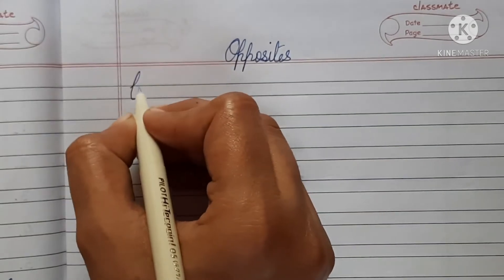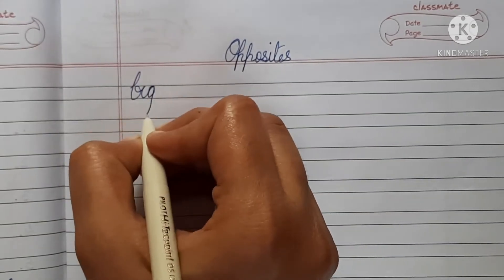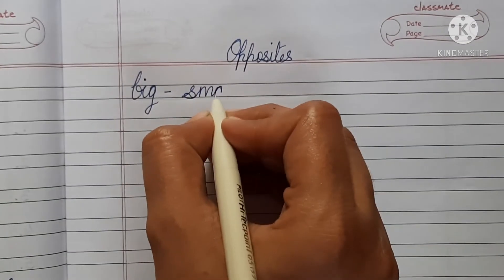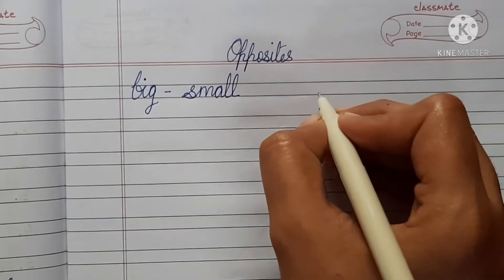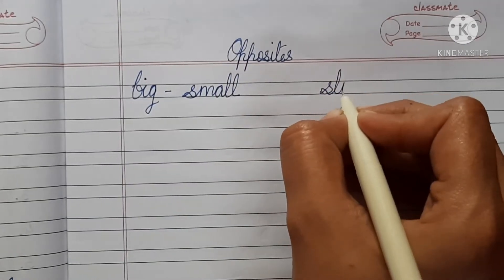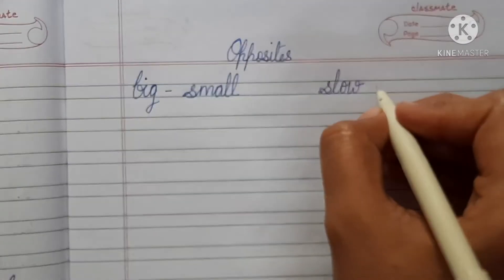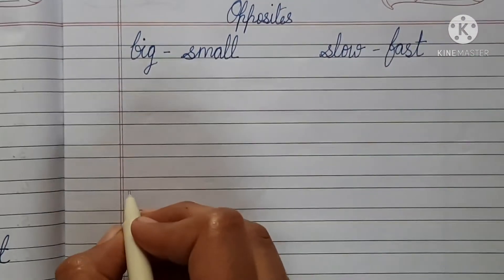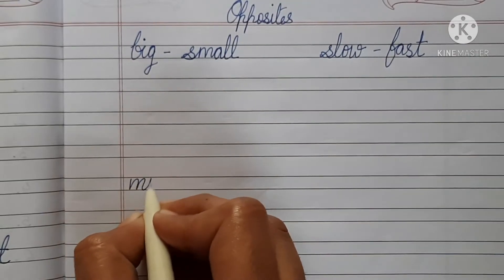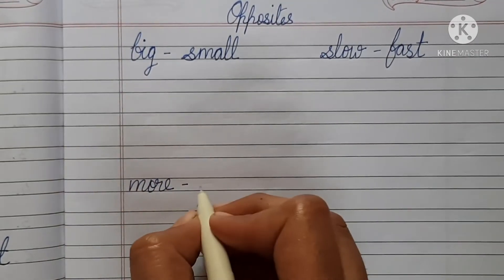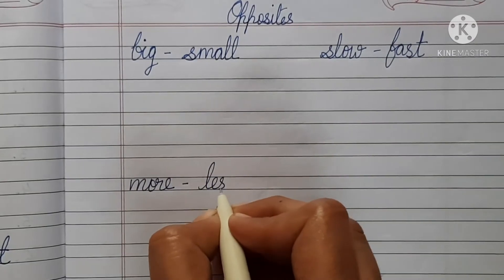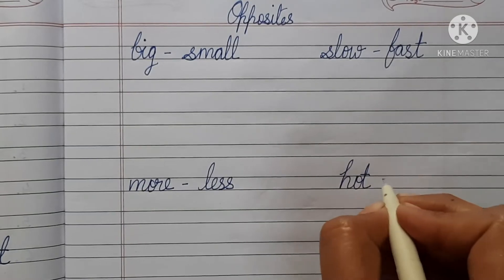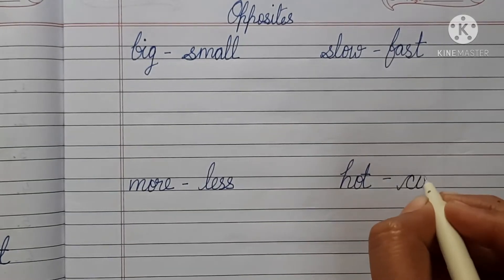Begin with big — B-I-G. The opposite of big is small. Then, slow — the opposite of slow is fast. Then, more — the opposite of more is less. Hot — the opposite of hot is cold.